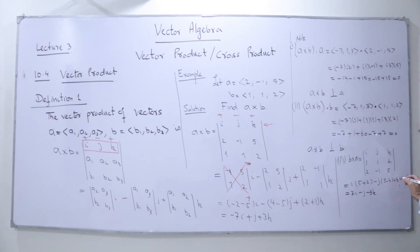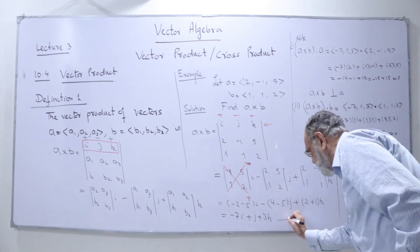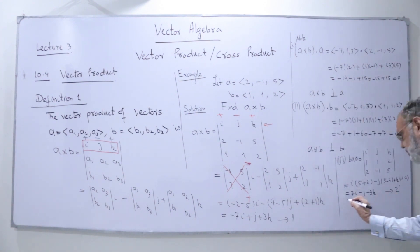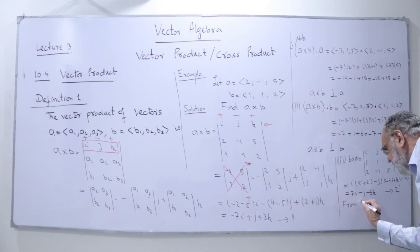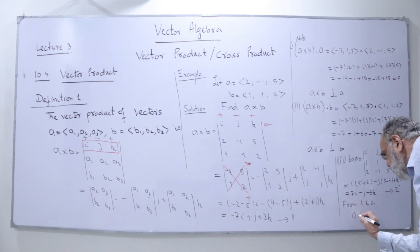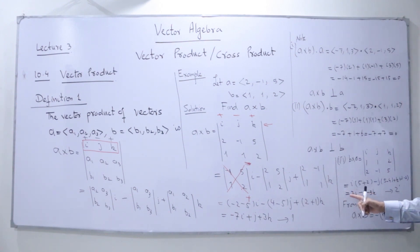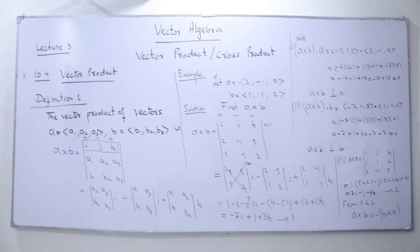Now I compare this result with the first one. This is result 1 (a cross b = -7i - j + 3k) and this is result 2 (b cross a = 7i - j - 3k). From results 1 and 2 we can say: a cross b is equal to minus b cross a. When I multiply result 2 by minus, I get -7i + j + 3k, which matches a cross b. So this is the property.